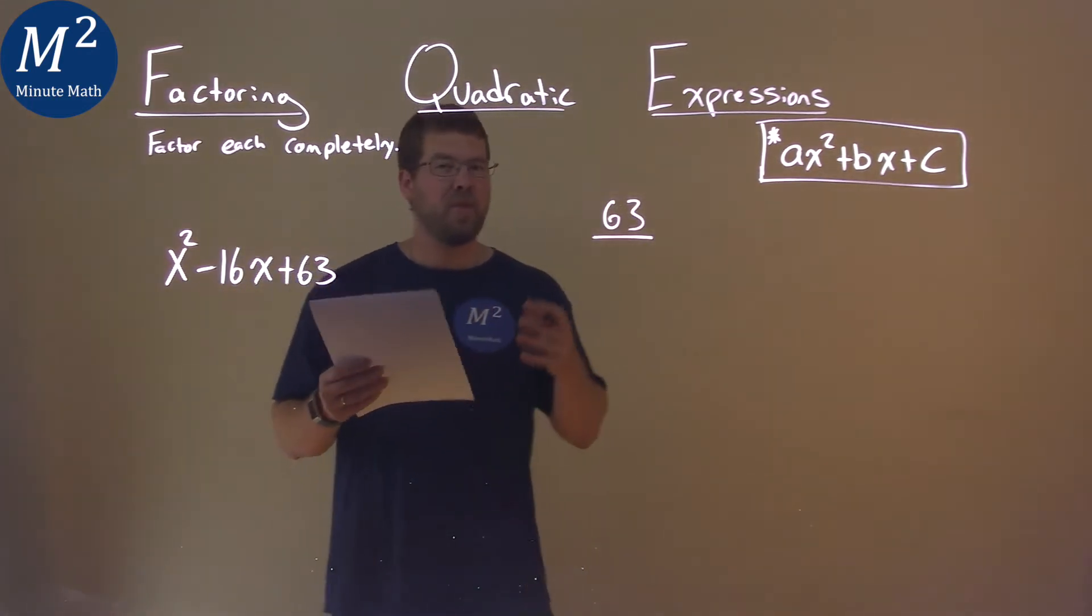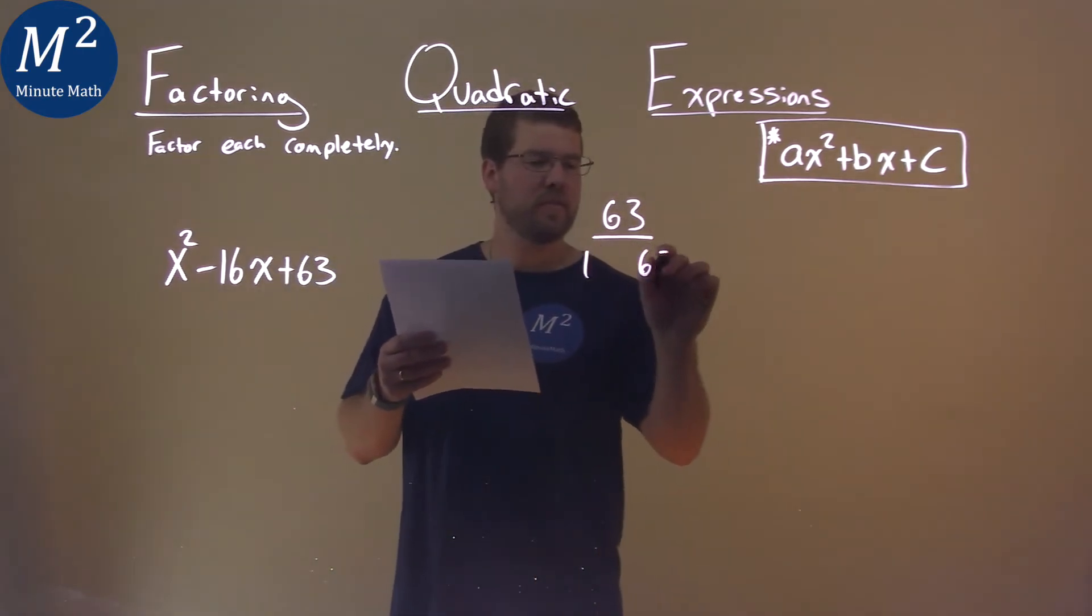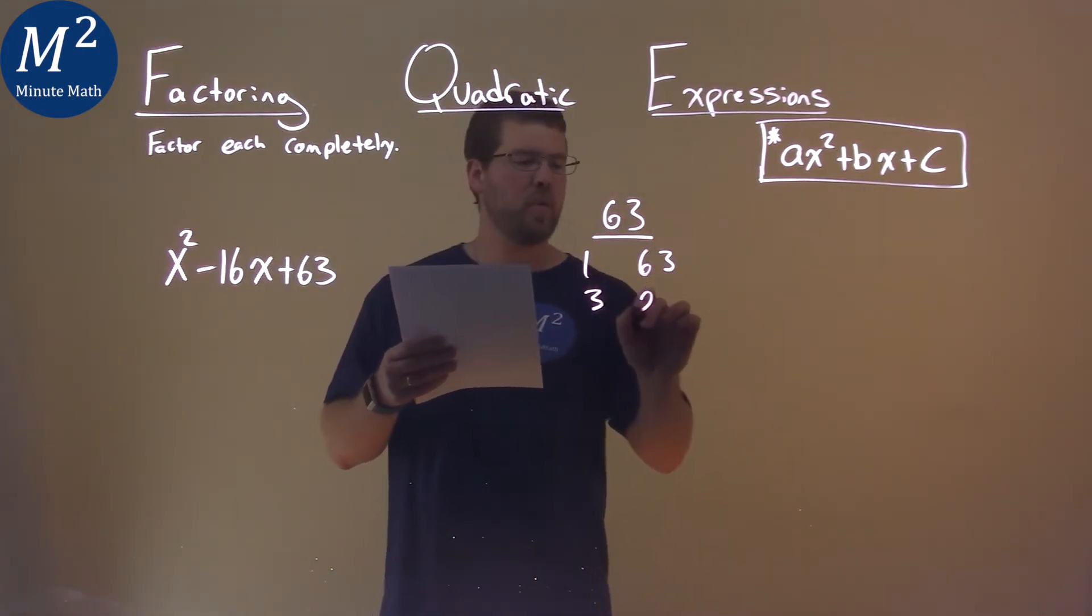So now I need to write all the multiples, two numbers that multiply to be 63. And that's 1 and 63, 3 and 21, and 7 and 9.